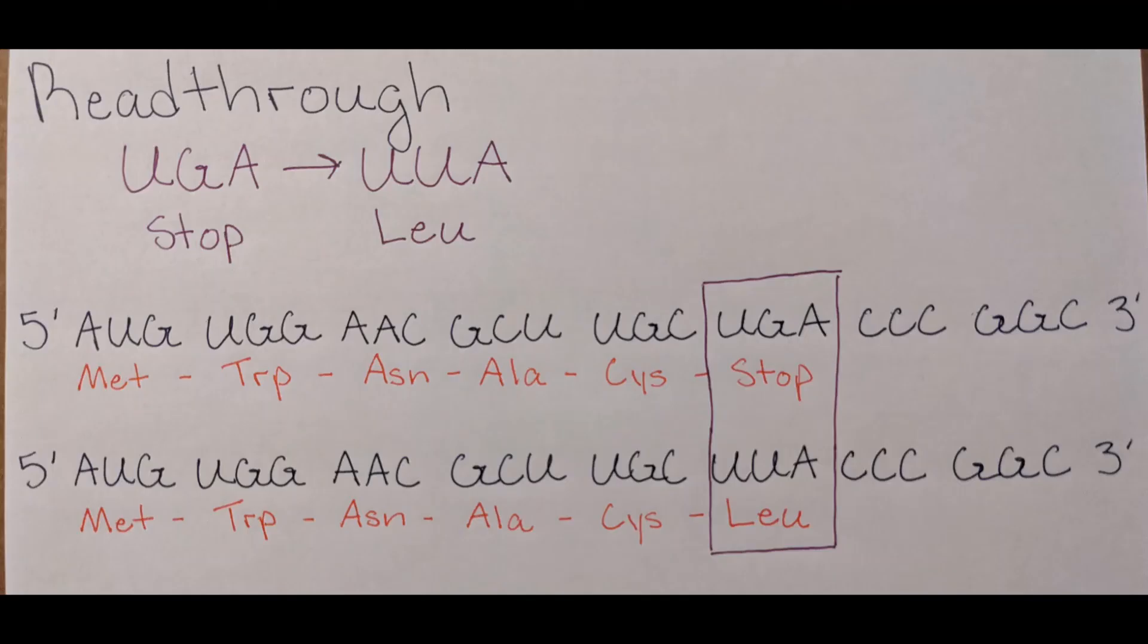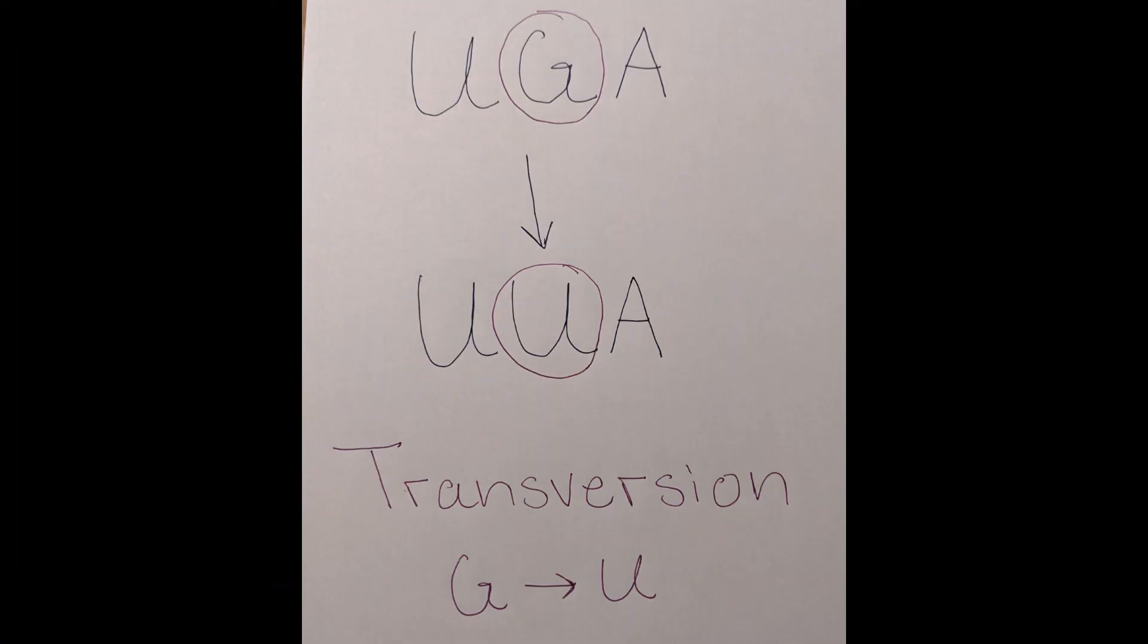The last mutation is called a read-through. This mutation changes the stop codon into a codon that has an amino acid, allowing the sequence to continue, resulting in a longer protein. This could affect the function of the protein.